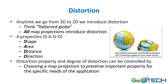All map projections will cause distortions when you go from a 3D to a 2D surface. I really like the example where you take the air out of a blow-up globe — you can see you cannot make it flat without cutting into it in some way. All maps do introduce distortions. One way to remember is SAD: the four properties are shape, area, distance, and direction. The distortion property and degree of distortion can be controlled somewhat — you want to use a map projection that preserves the most important property for your application.